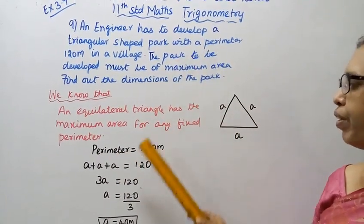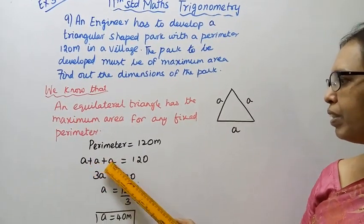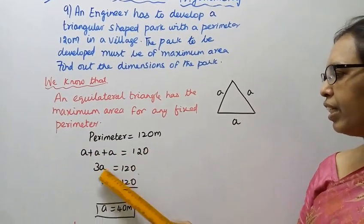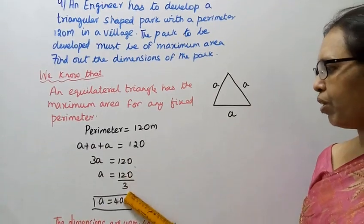Perimeter is 120 meter. A plus A plus A equal to 120. 3A equal to 120. A equal to 120 by 3.